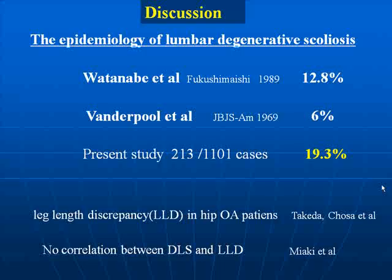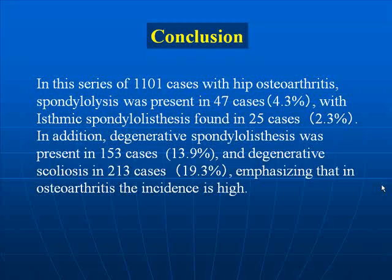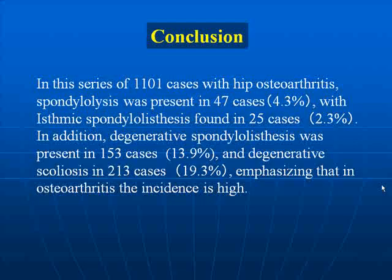Conclusion: In this series of 1,101 cases with hip osteoarthritis, spondylolysis was present in 47 cases, with spondylolisthesis found in 25 cases. In addition, degenerative spondylolisthesis was present in 153 cases and degenerative scoliosis in 213 cases, emphasizing that in hip osteoarthritis the incidence of these conditions is high. Thank you for your attention.